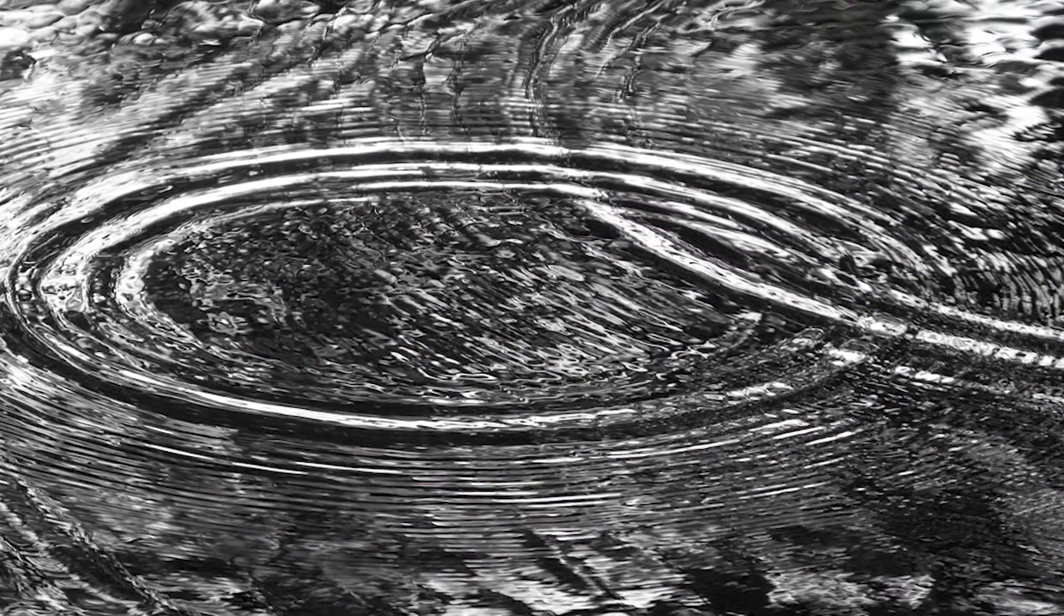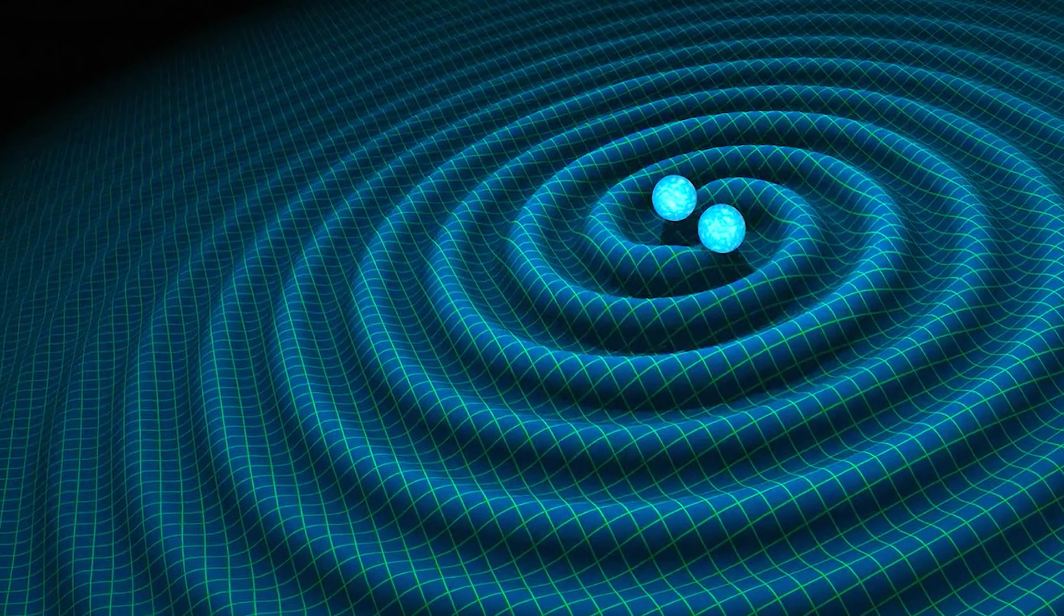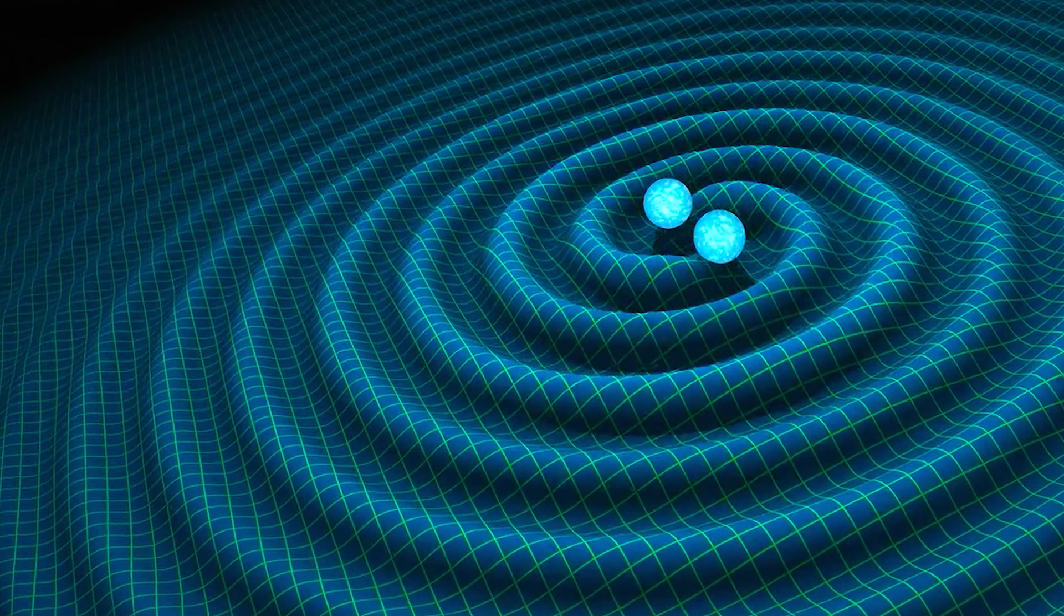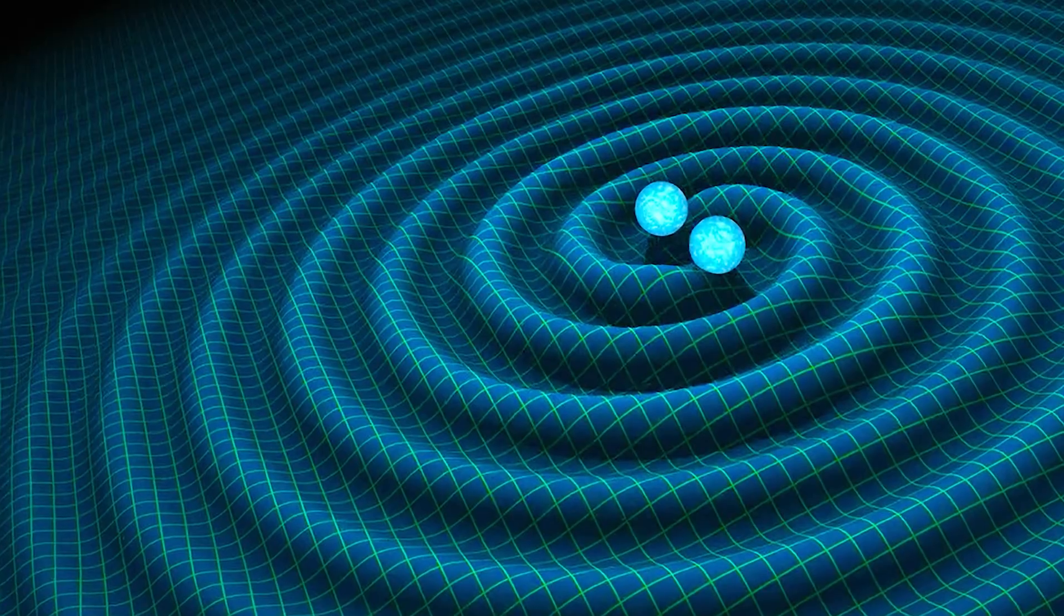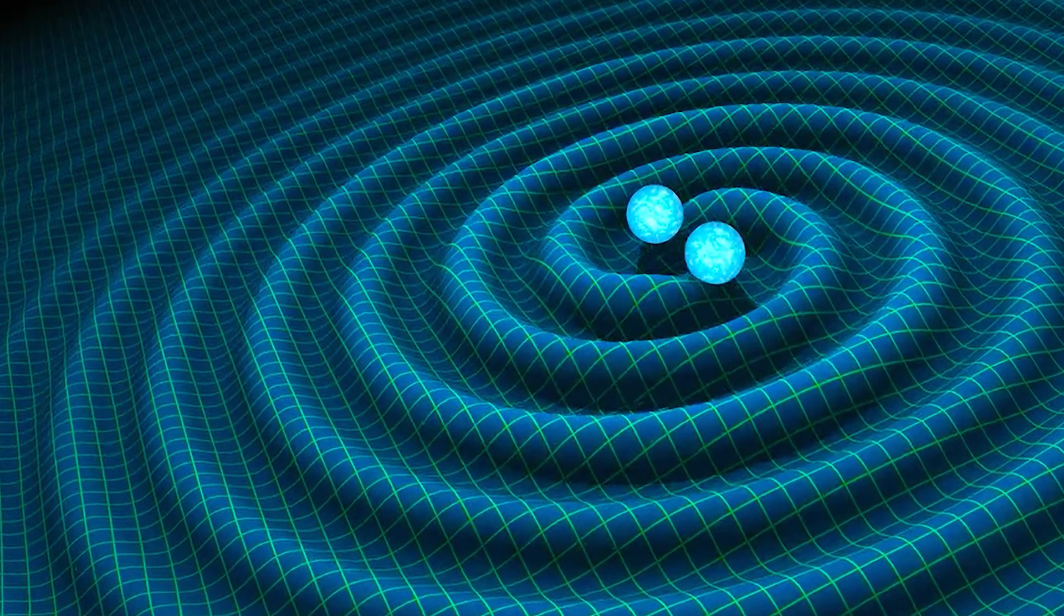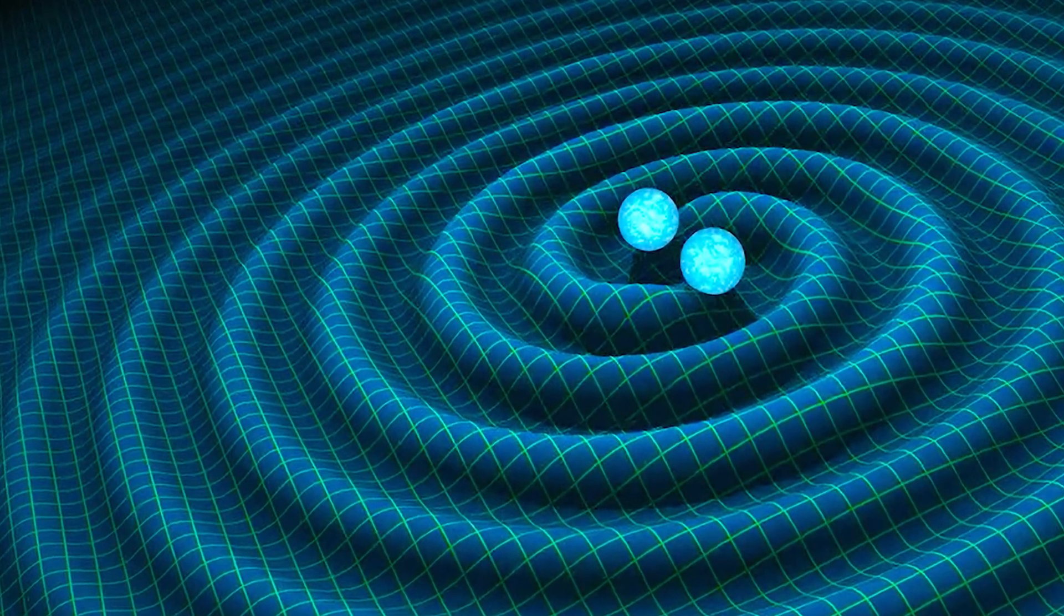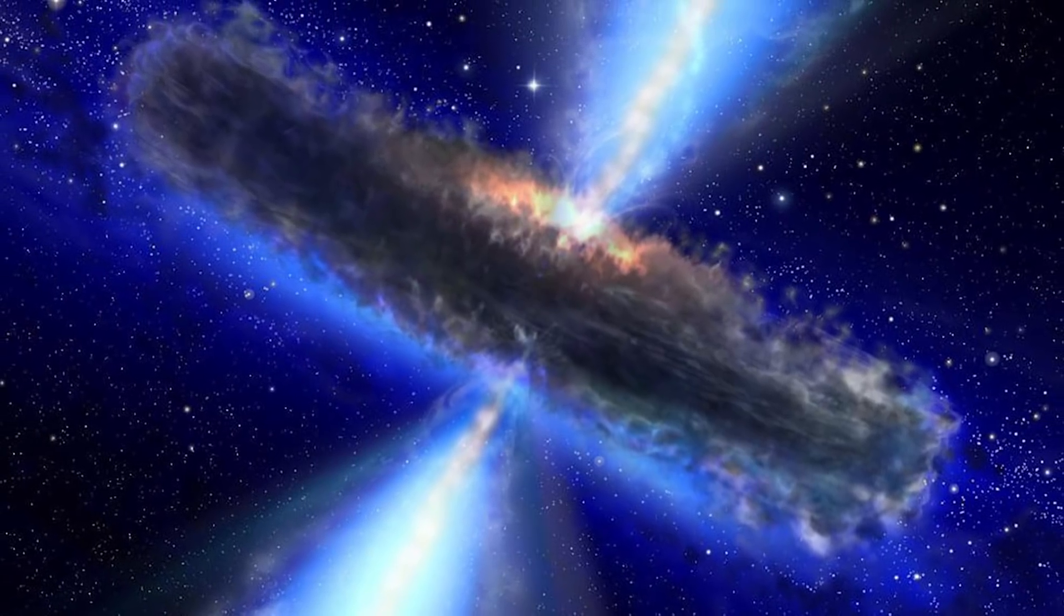But in this case, the ripples are traveling through space at the speed of light. The larger the object, the larger the wave and easier it is to detect. For a long time, many scientists didn't even believe that gravitational waves existed because they are super hard to detect—they're so tiny. Let me explain how tiny they are.